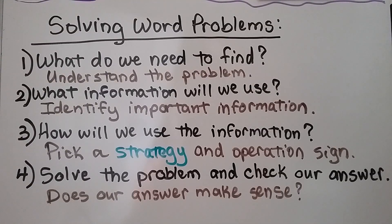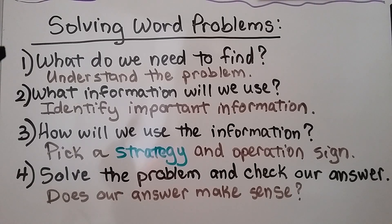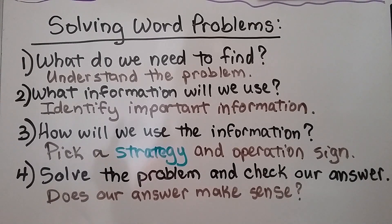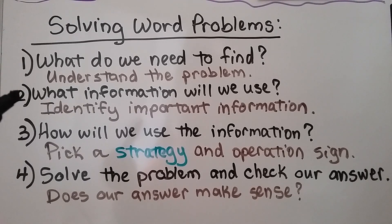When we're solving word problems, there are a few steps we need to make sure we are aware of. The first thing is: what do we need to find? We need to understand the problem and know what it's asking of us. Number two: what information will we use? We need to circle, underline, or identify important information that we're going to use.